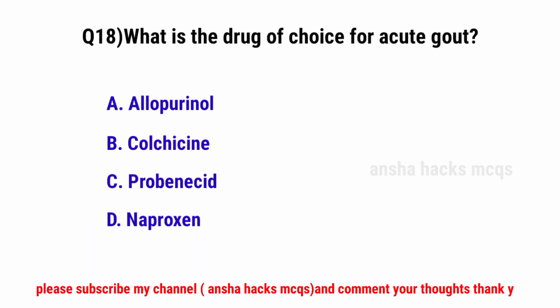Question No. 18. What is the drug of choice for acute gout? The correct option is D: Colchicine.